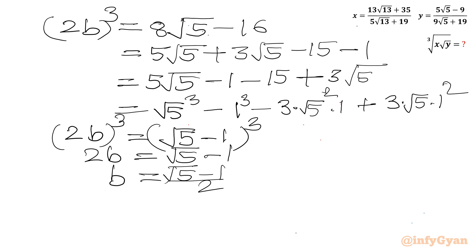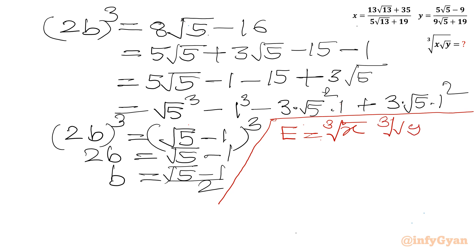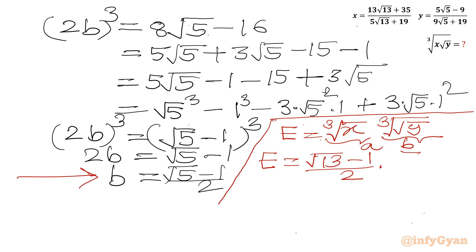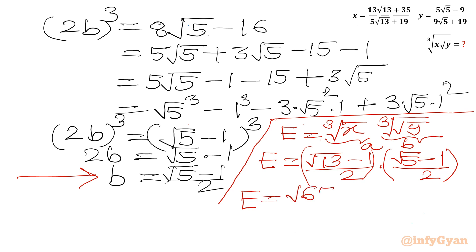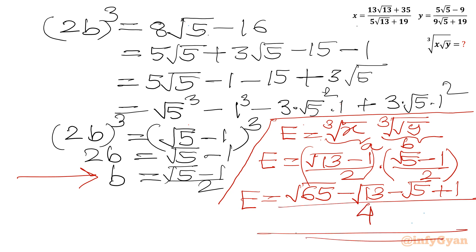Now we have to calculate our expression a times b. So I will write expression e equal to ∛x times ∛(√y), which we considered a and b. So it is the product of a and b. A was (√13 − 1) over 2 and b is (√5 − 1) over 2. Multiplying, I will write the answer in this form: (√65 − √13 − √5 + 1) divided by 4. This is our final answer.